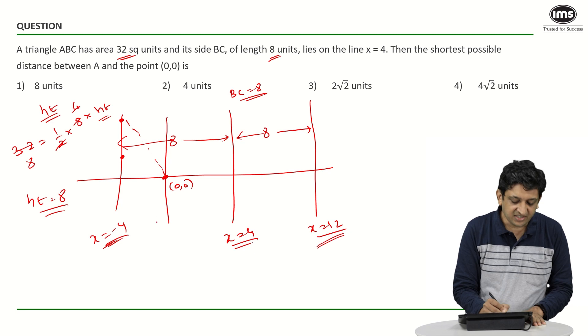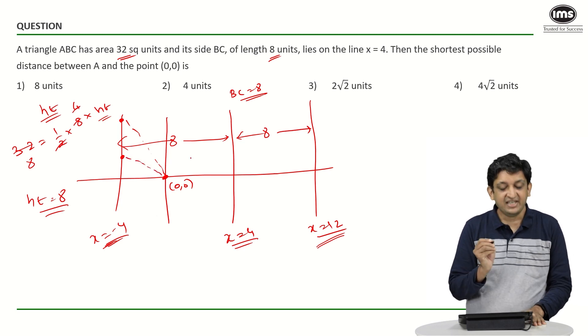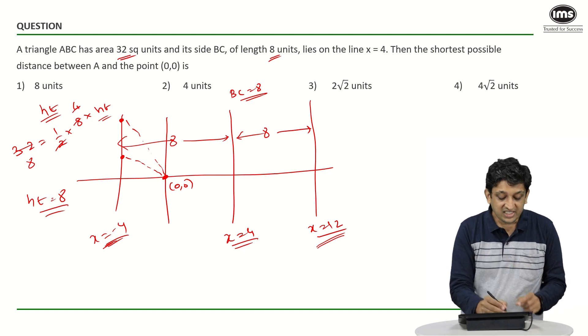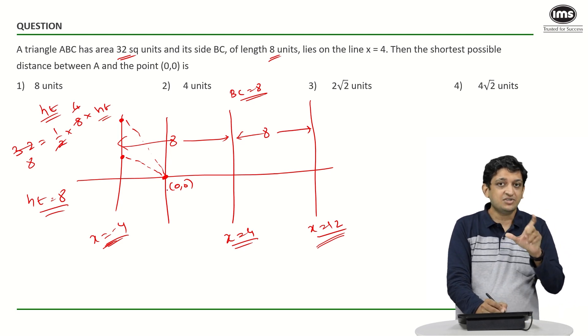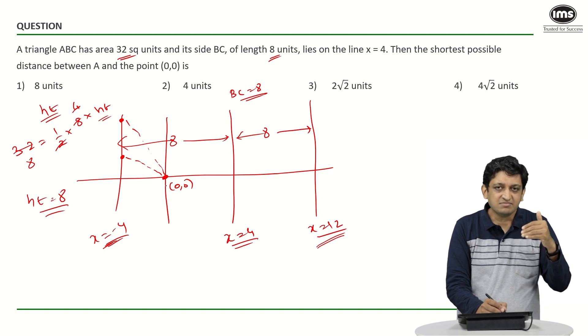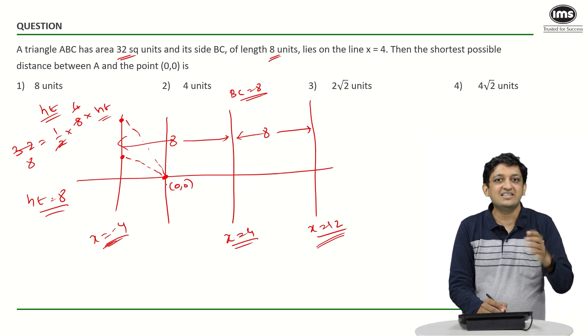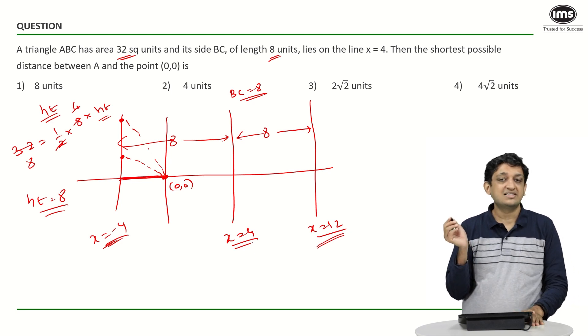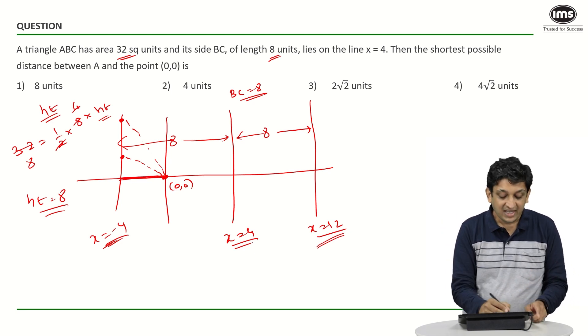If I put this point here, the distance between A and the origin will be the dotted line that I have drawn. The point is, because the origin is fixed, all these dotted lines that I have drawn will be at a slightly larger distance compared to this horizontal distance that we have.